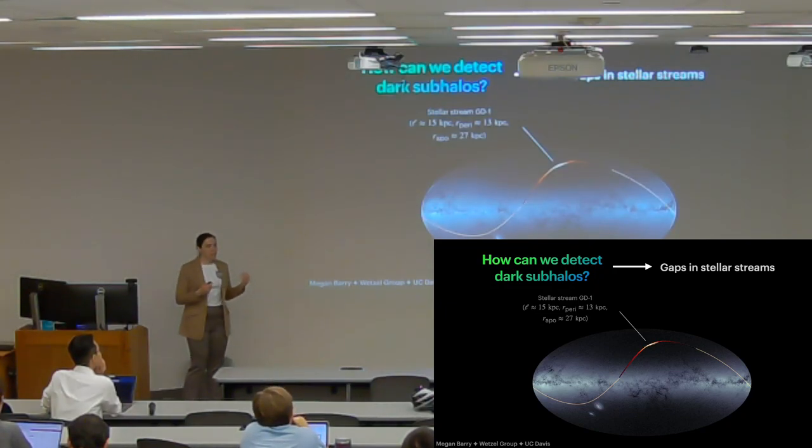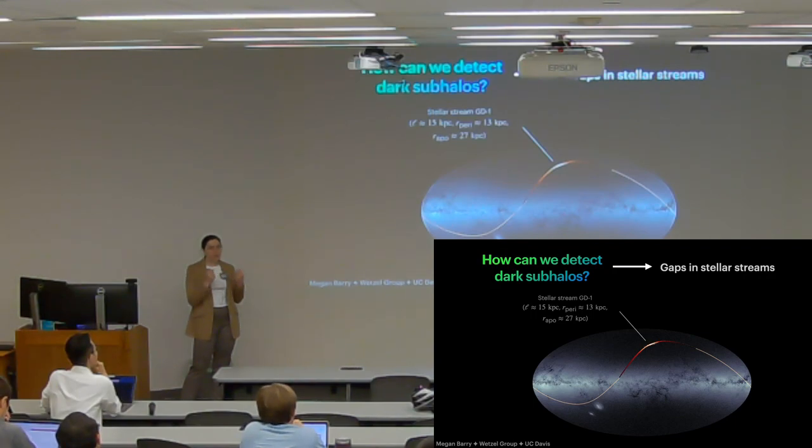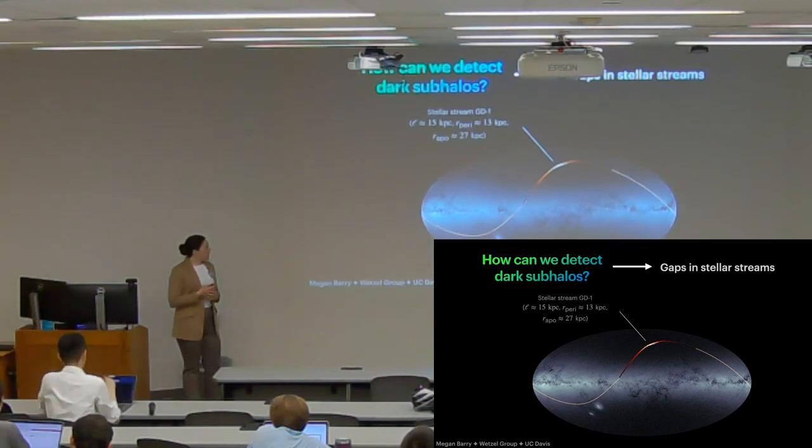And I'll also quickly introduce sort of an ideal stellar stream. This is an actual stellar stream that's been detected called GD1. It's very long and thin and cold, so it's relatively easy to find perturbations in this stream. So to contextualize some of our results, I'll refer to this stream. It's about 15 kiloparsecs long and its orbit ranges from about 10 to 30 kiloparsecs. There are plenty of other streams out there, but this is about the range that our results are going to focus on.